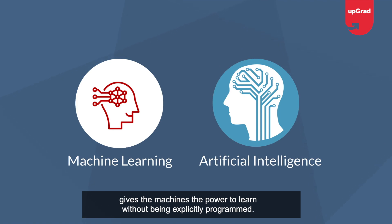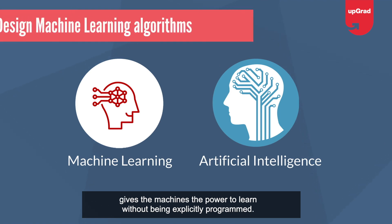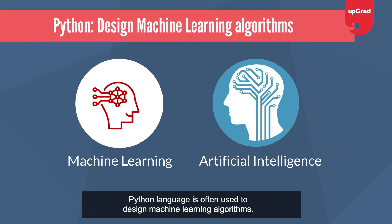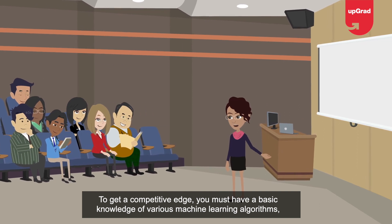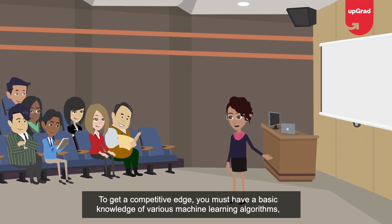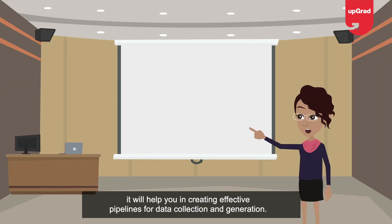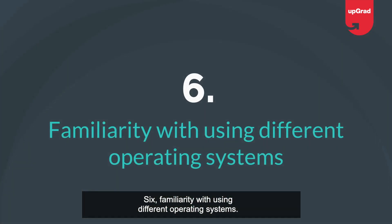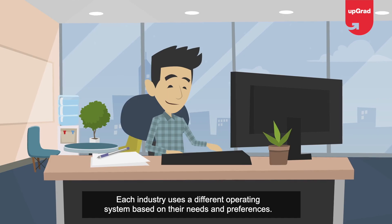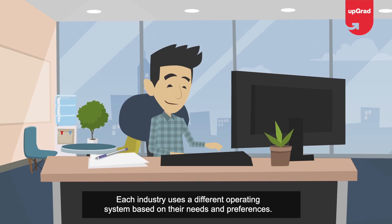Step five: basic understanding of machine learning. Machine learning is the branch of artificial intelligence that gives machines the power to learn without being explicitly programmed. Python is often used to design machine learning algorithms. Having a basic knowledge of various machine learning algorithms will help you create effective pipelines for data collection and generation.